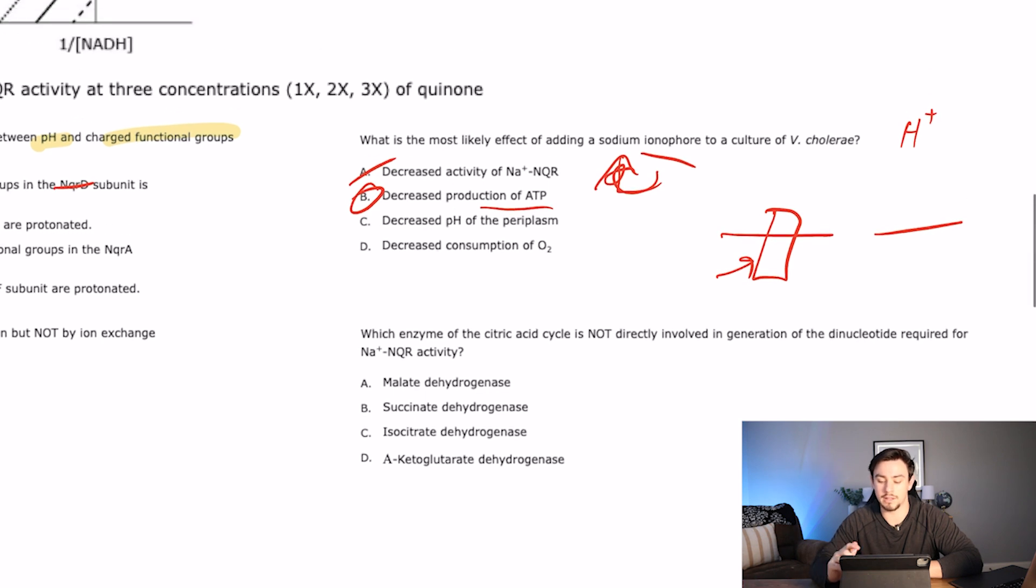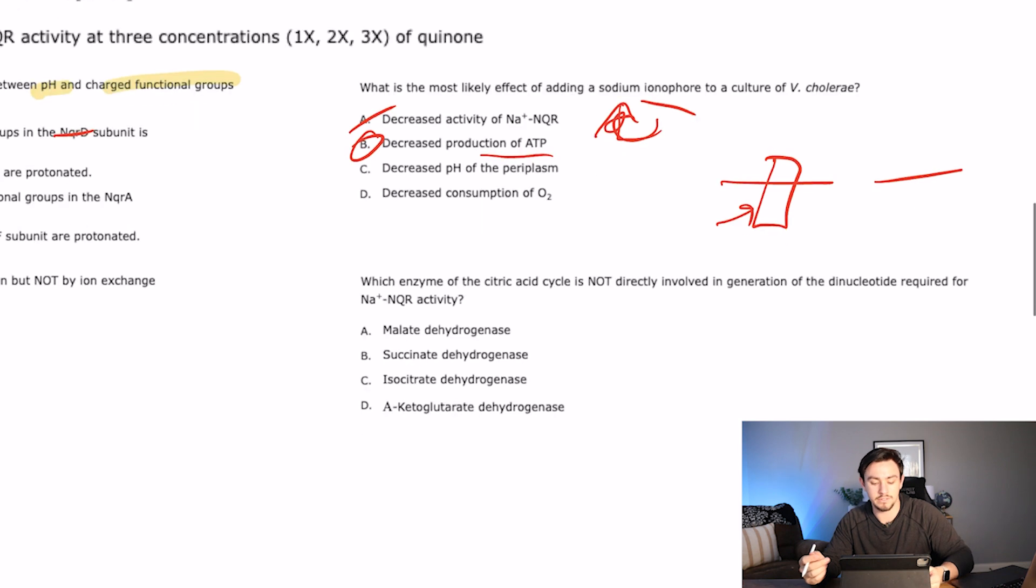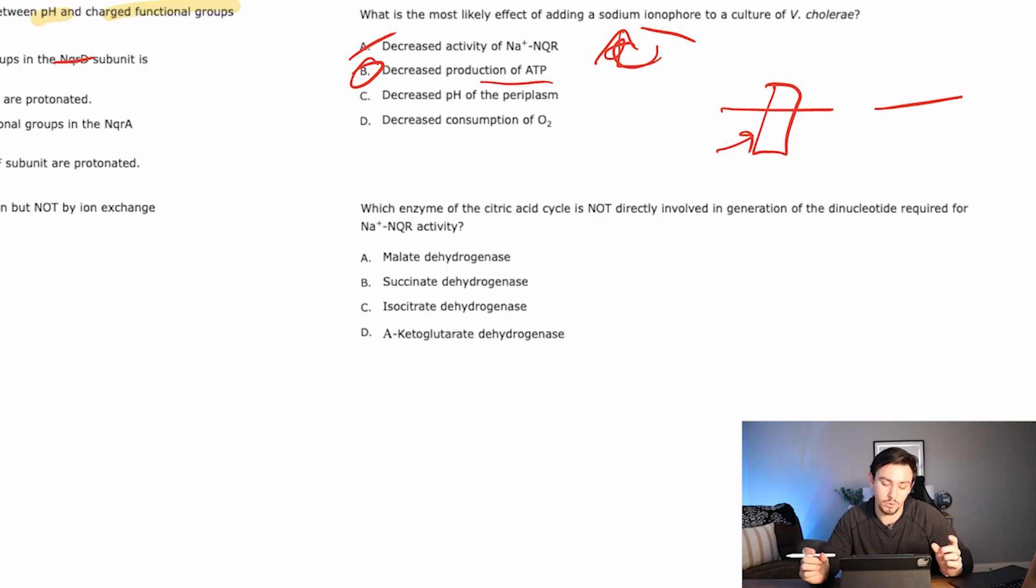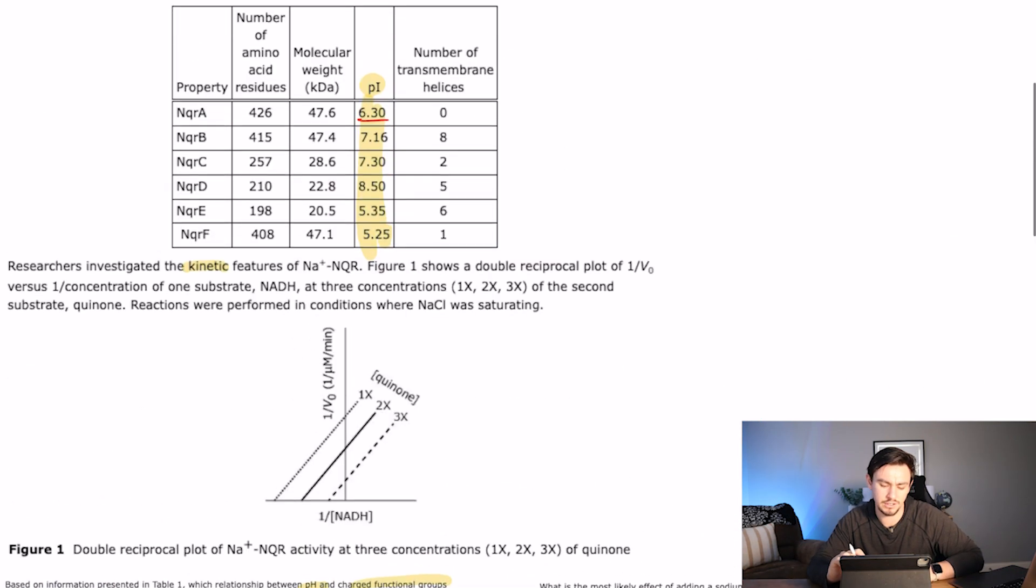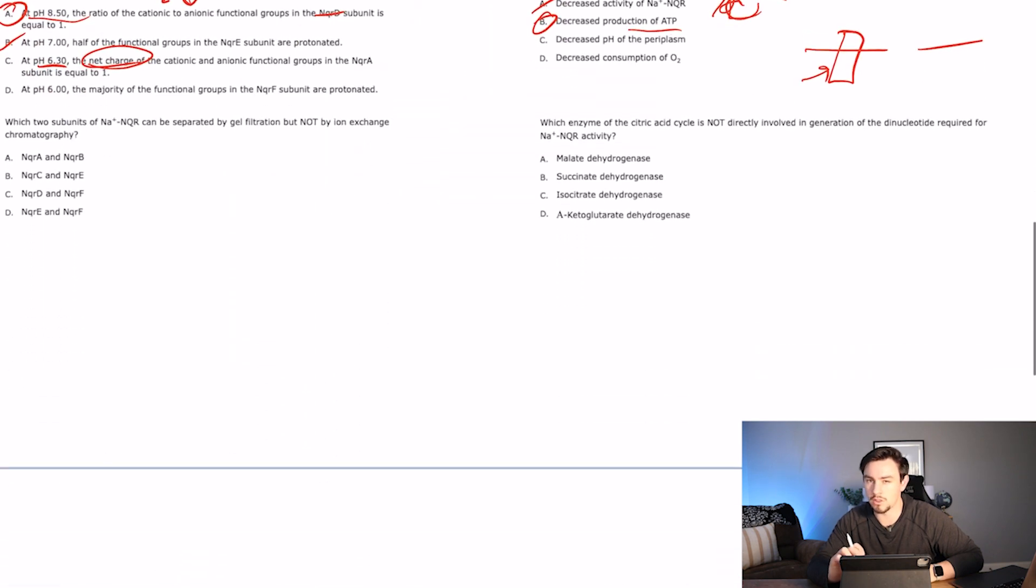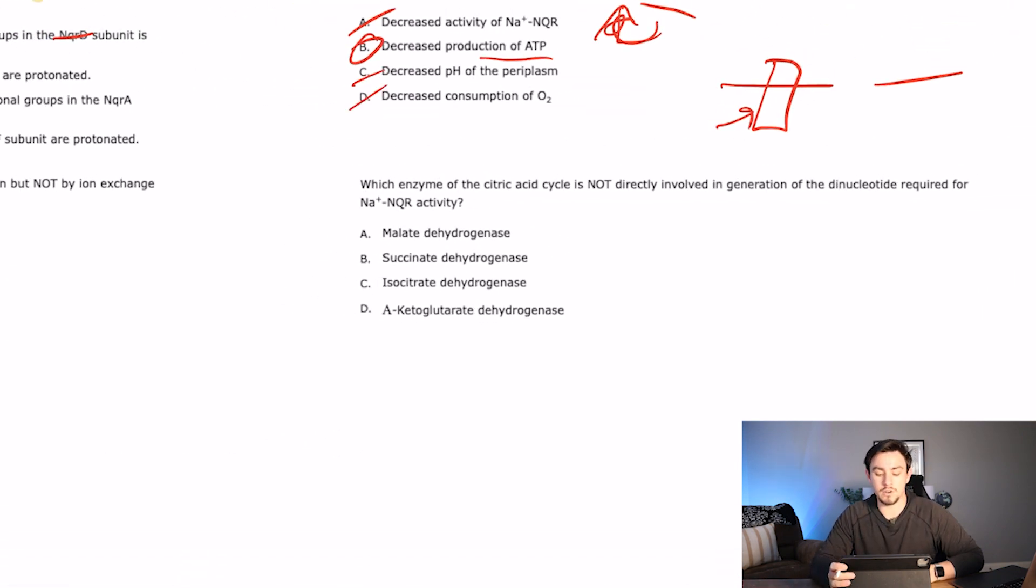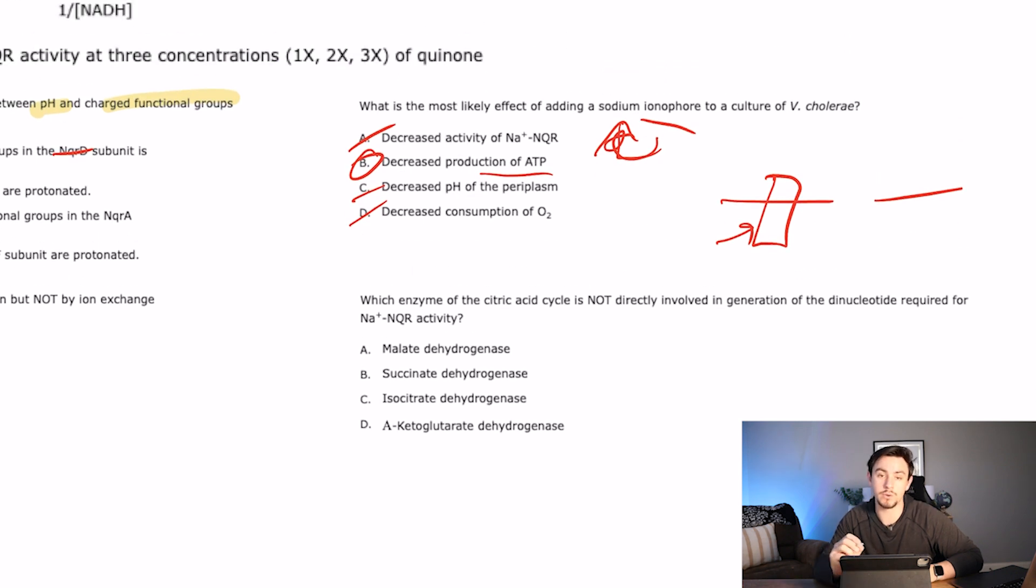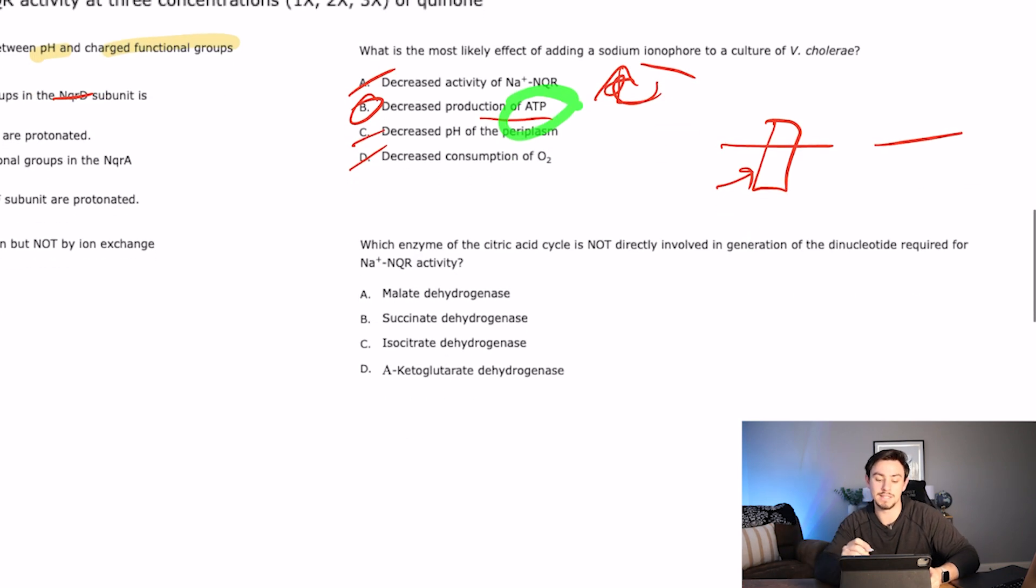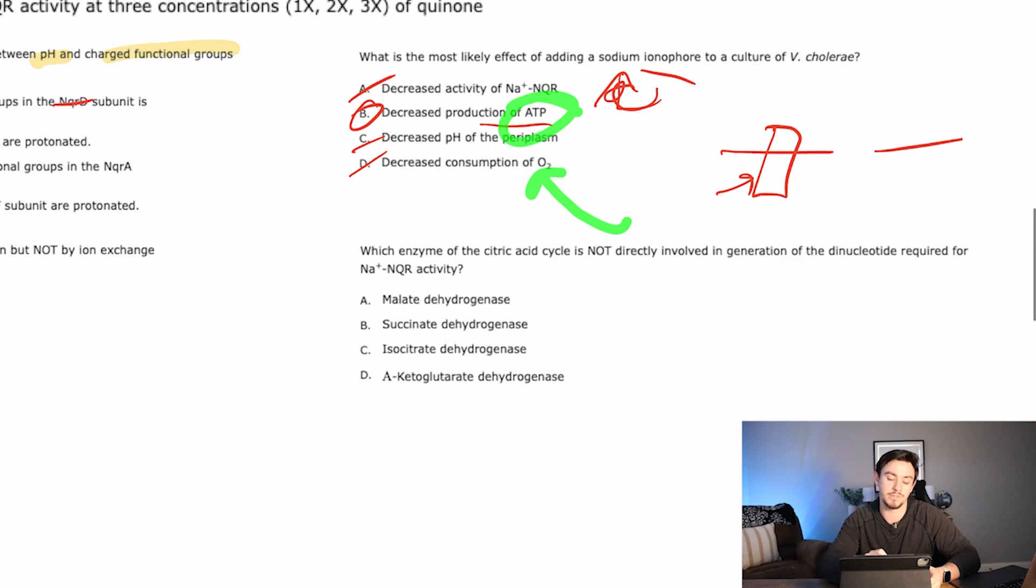C says decreasing the pH of the periplasm. Well, maybe that would be true for the electron transport chain, but here we're talking about moving sodiums and sodiums are not impacting pH. Not directly. So maybe not C. And then D says decreasing the consumption of oxygen. Well, oxygen is going to be a virtue of activity. And so we're not decreasing the consumption of oxygen. Again, we're not told that that is like the final electron acceptor like we would be with the electron transport chain. And oxygen is just not really talked about a whole lot in this passage. So it would not be good to draw that parallel. So maybe not to D. Correct answer here would be B. Again, they talked about the sodium being directly linked to energy. So that's why it's okay to make this parallel or this leap to ATP. But they did not talk about oxygen as being the final electron acceptor. So it's not okay to make that leap.